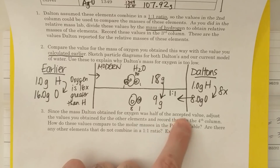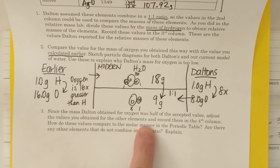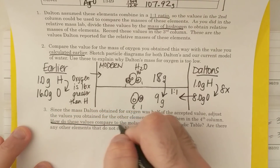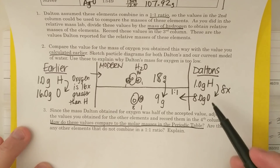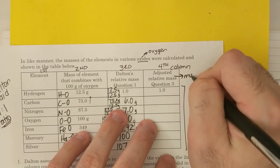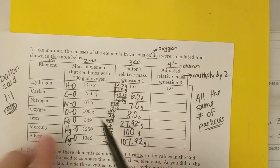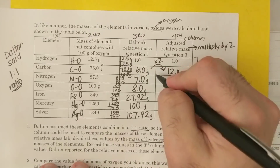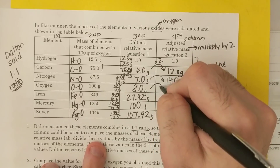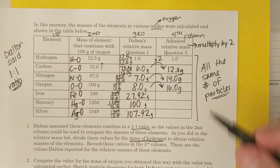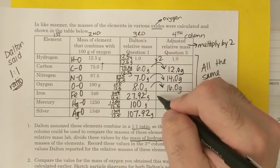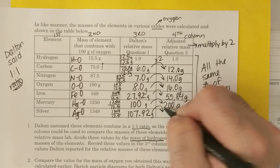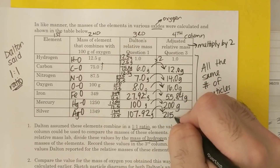Since the mass Dalton obtained for oxygen was half the accepted value, adjust the values for all other elements by multiplying by 2 and record them in the fourth column. Carbon becomes 12, nitrogen becomes 14, oxygen becomes 16, iron becomes 55.84, mercury becomes 200, and silver becomes 215.84 grams.